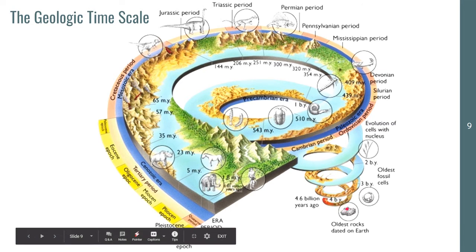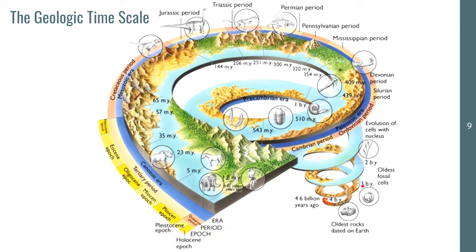Around 4 billion years ago, the oldest rocks were dated on our planet. That's when the oldest rocks started to appear or were discovered. Around 3 billion years ago, fossils of the cells were discovered. These were the time where the oldest cells started to emerge. Then 2 billion years ago, the evolution of cells with the nucleus, followed by the Pre-Cambrian era.